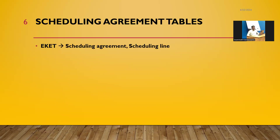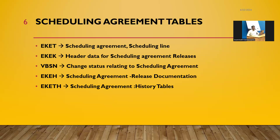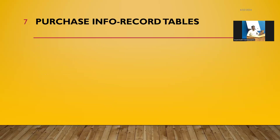Next, Scheduling Agreement tables. EKET: Scheduling Agreement Scheduling Line. EKEK: Header Data for Scheduling Agreement Releases. BBSN: Change Status Relating to Scheduling Agreement. EKEH: Scheduling Agreement Release Documentation. EKETH: Scheduling Agreement History Tables.